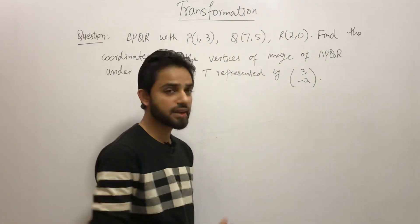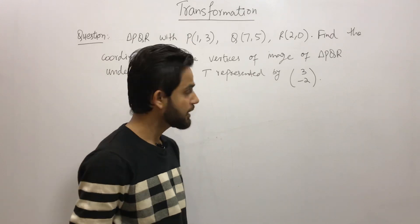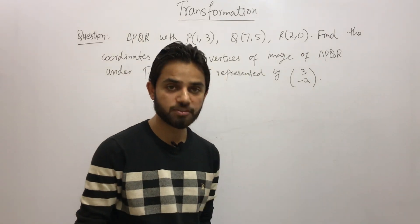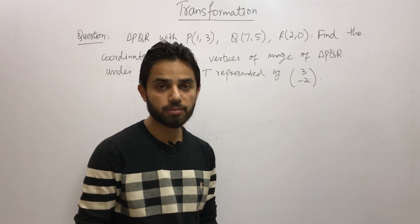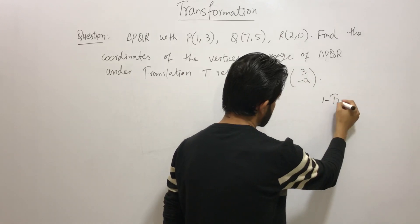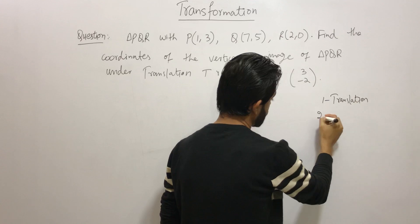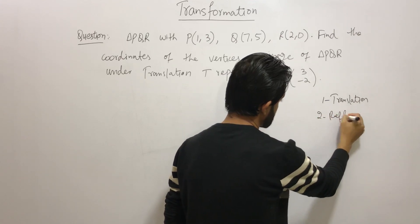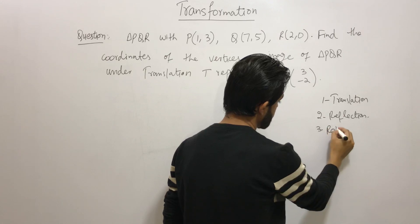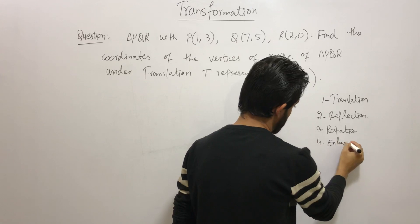We are going to learn how transformation works in mathematics. Let me tell you my plan about how I am going to cover this topic and upload my videos. The transformation we have is basically of four types: the first is translation, then we have reflection, then rotation, and last but not least, enlargement.